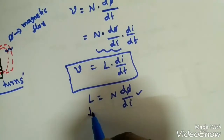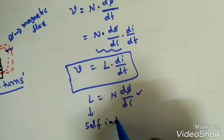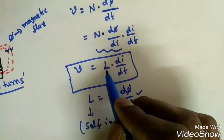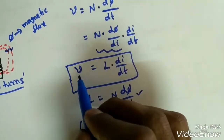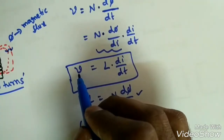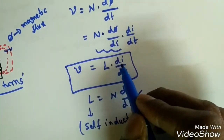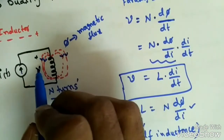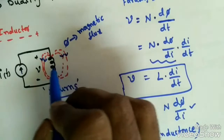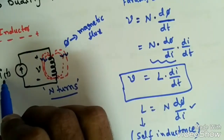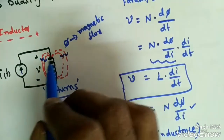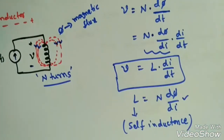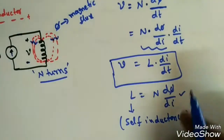This parameter L is called self-inductance. It is called self-inductance because it relates the induced voltage in a coil to the time-varying current in that same coil — both the voltage and the current are in the same coil.